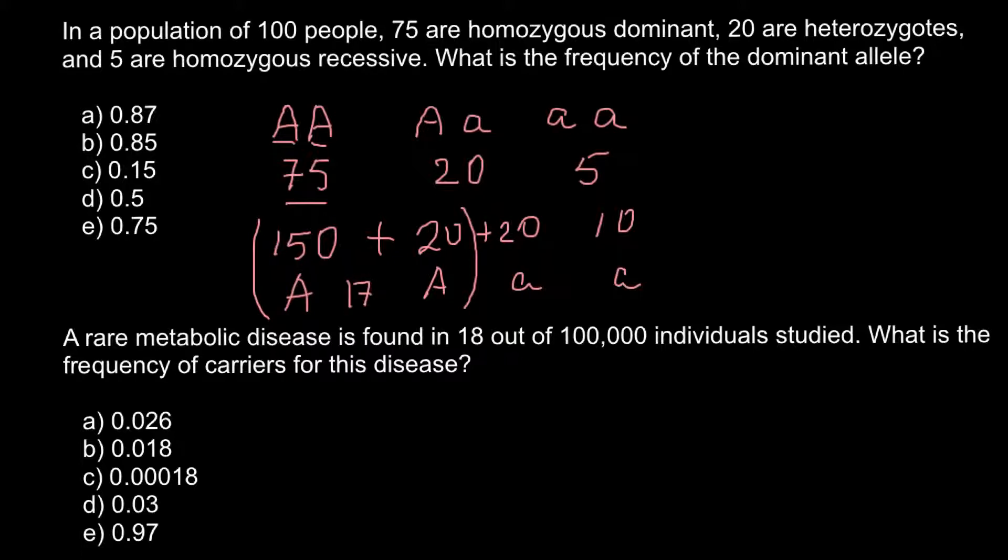And what we are going to get is 170. So I write it here. So if we add 150 and 20, we are going to get 170. And now, total number would be 200. Because we just have to add all these numbers. 150 plus 20 plus 20 plus 10. And all together, this is going to be 200.